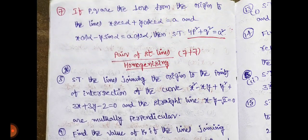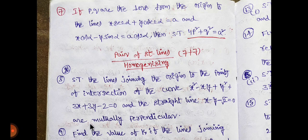Next one: P and Q are the perpendiculars from the origin to the lines. 4P squared plus Q squared equals A squared. Next, pair of straight lines - 2 to 7 marks.